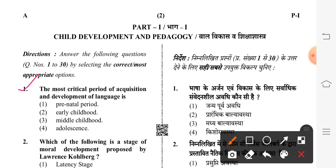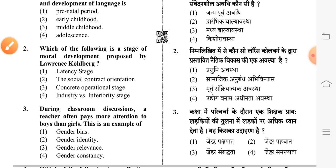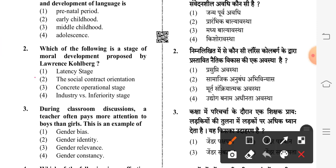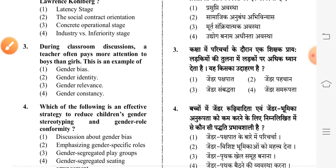Second question: which of the following is a stage of moral development proposed by Lawrence Kohlberg? The second option is correct: the social contract orientation. Next question: during classroom discussions a teacher often pays more attention to boys than girls — this is an example of first option: gender bias.